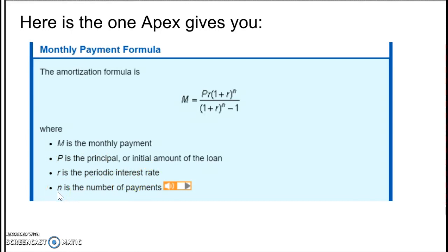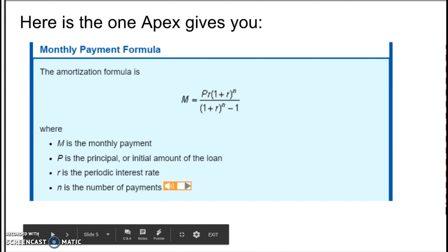And N, before we've been using it for the number of times it's compounded. In this case we're using N as the number of payments that are going to be made. So keep that in mind - R and N are just slightly different than the R and N we've been using.